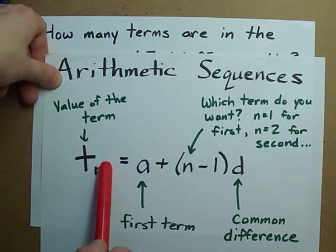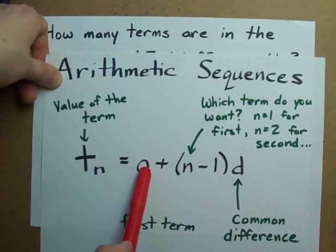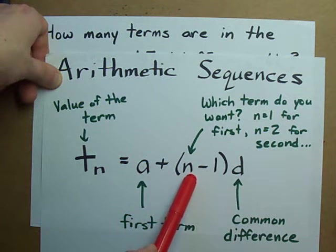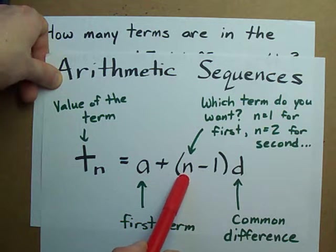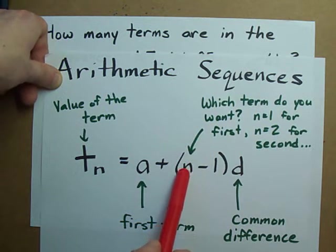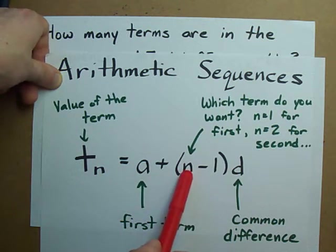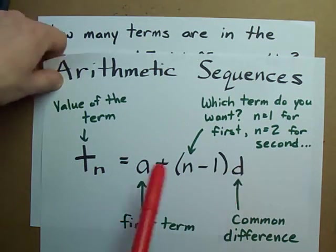where we have the value of a particular term, the first term, the whatever term corresponds to this value, and the common difference.